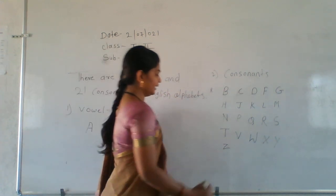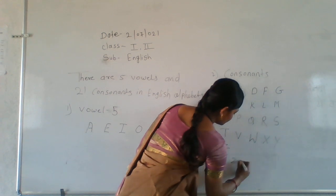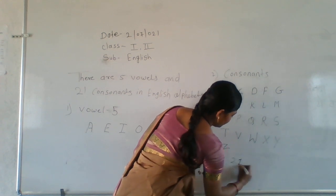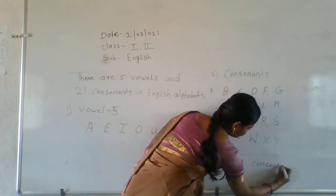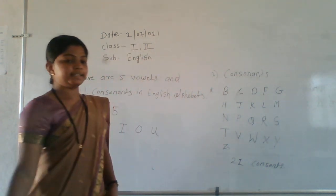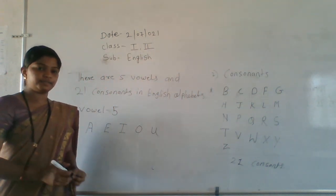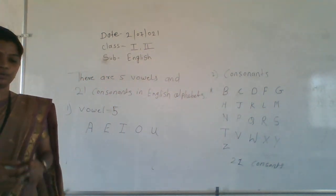There are 21 consonants. How many? 21. Write down children in your C.W. book.